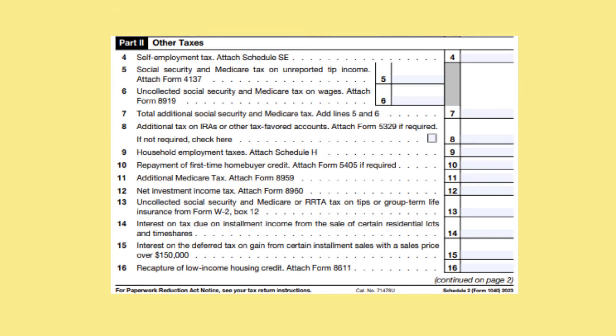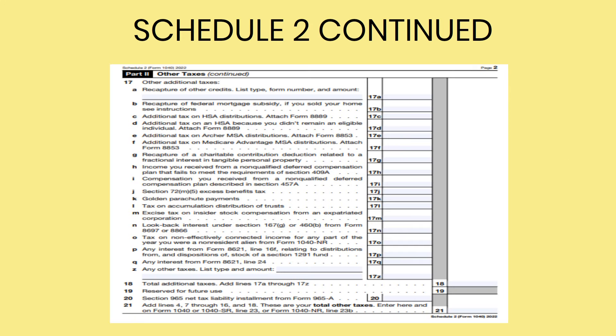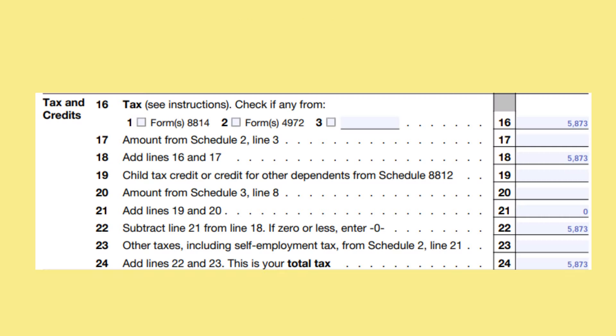On line 23, you will put any other taxes that you have from Schedule 2, line 21. The most common one is self-employment tax from when you have your own business. In our example, this will be left blank as we don't have any. On line 24, you will add lines 22 and 23 together to arrive at your total tax of $5,873.